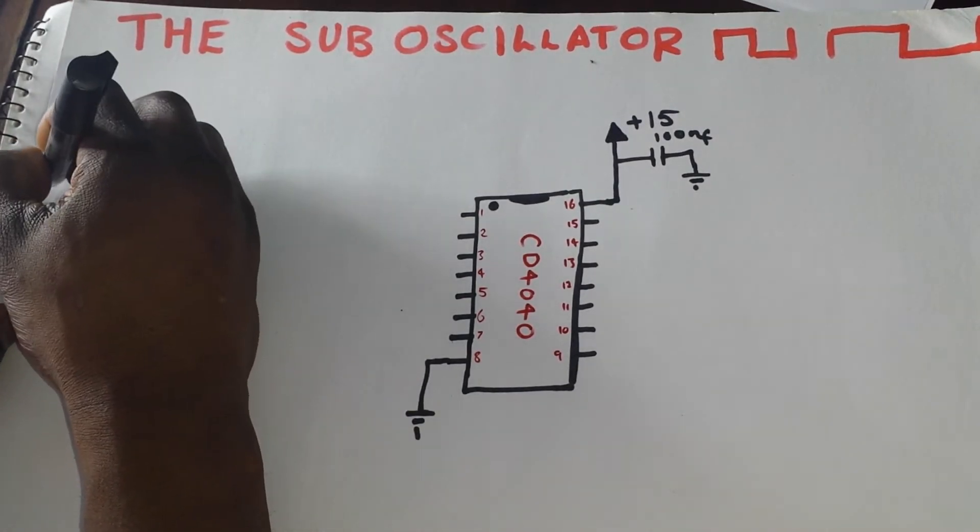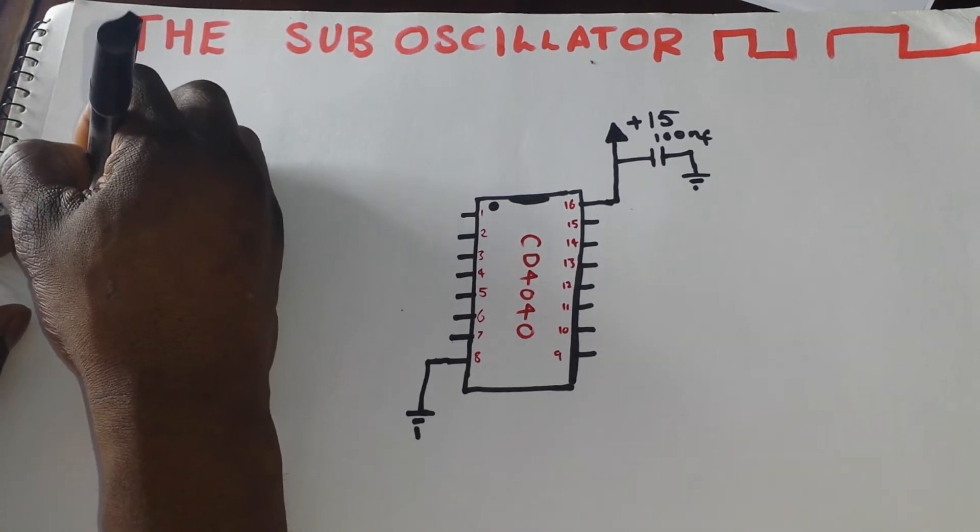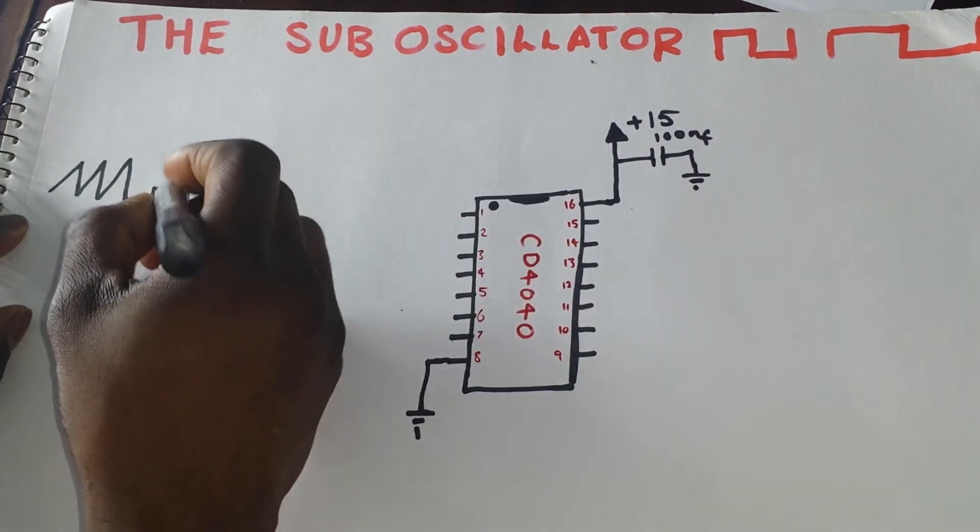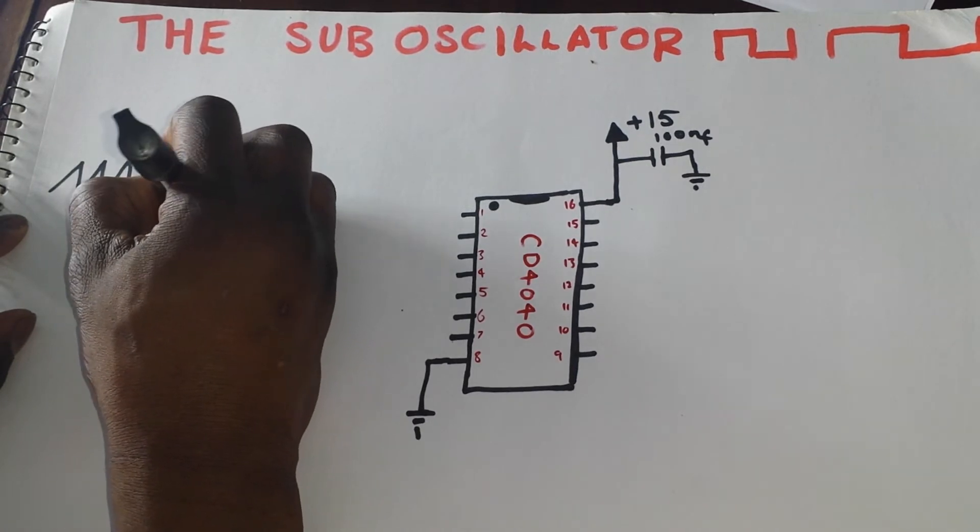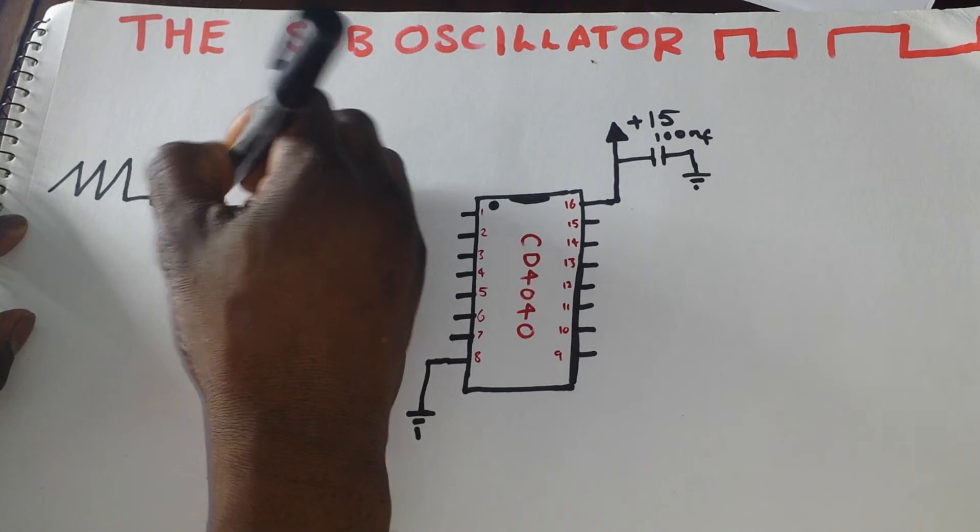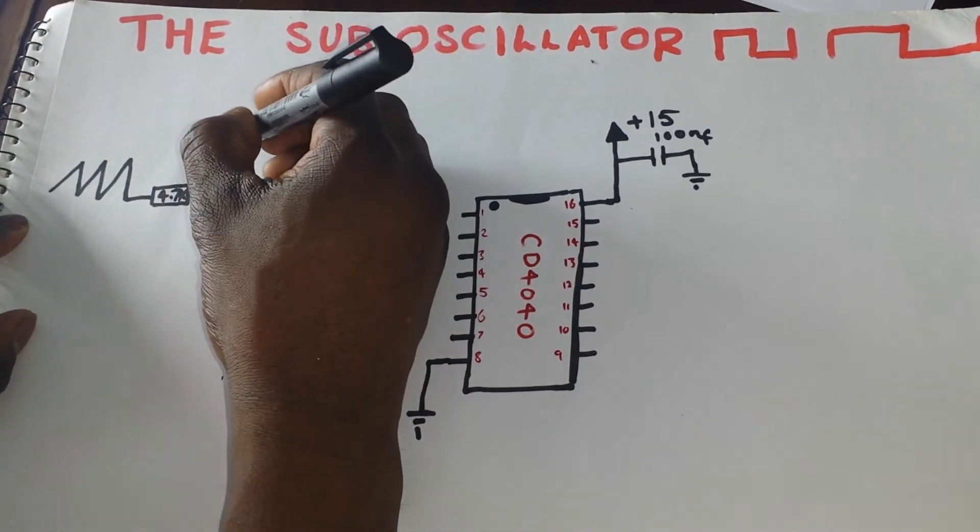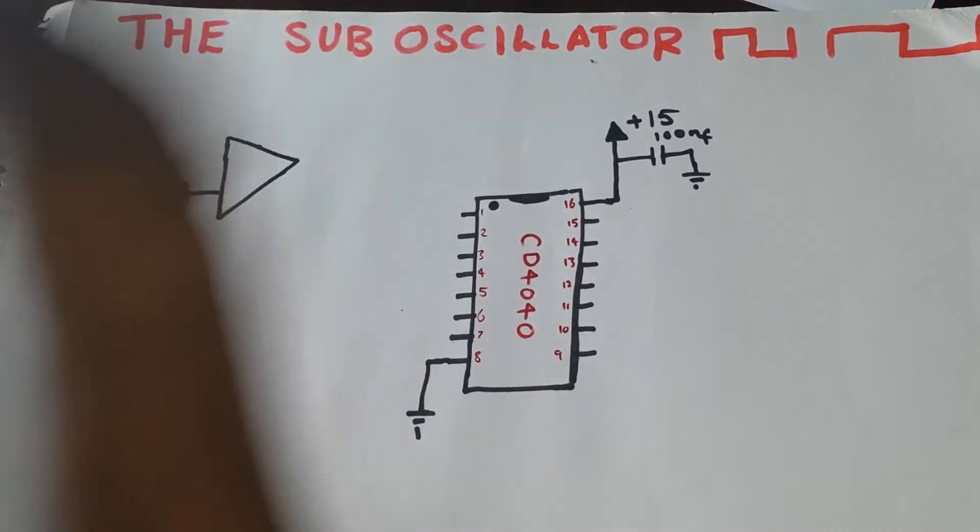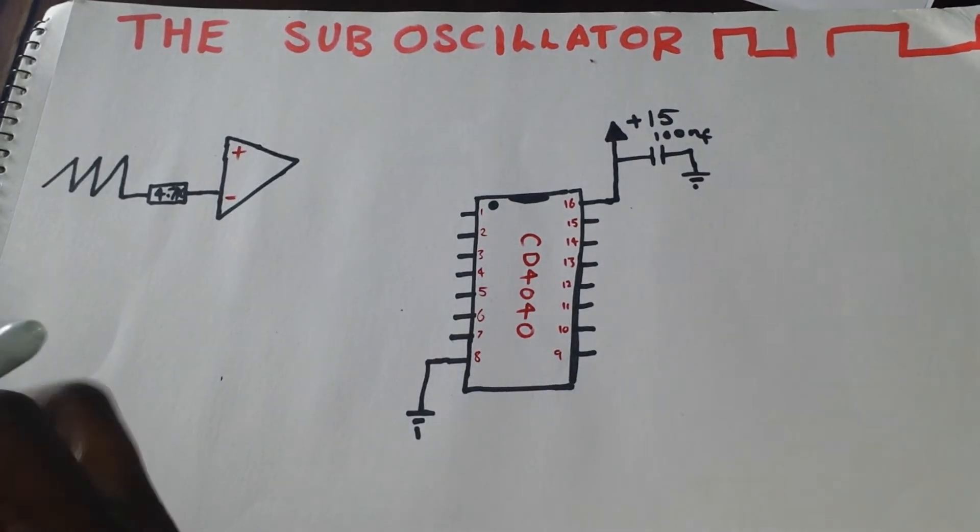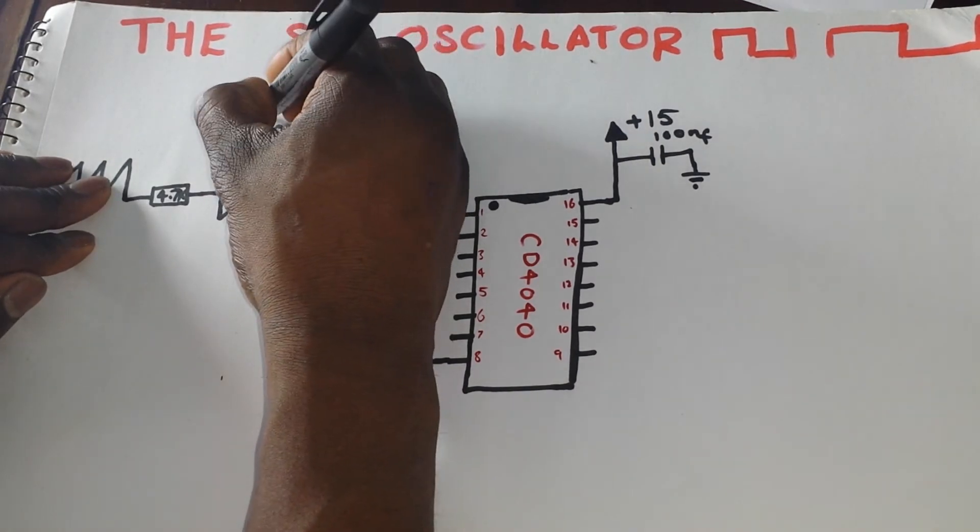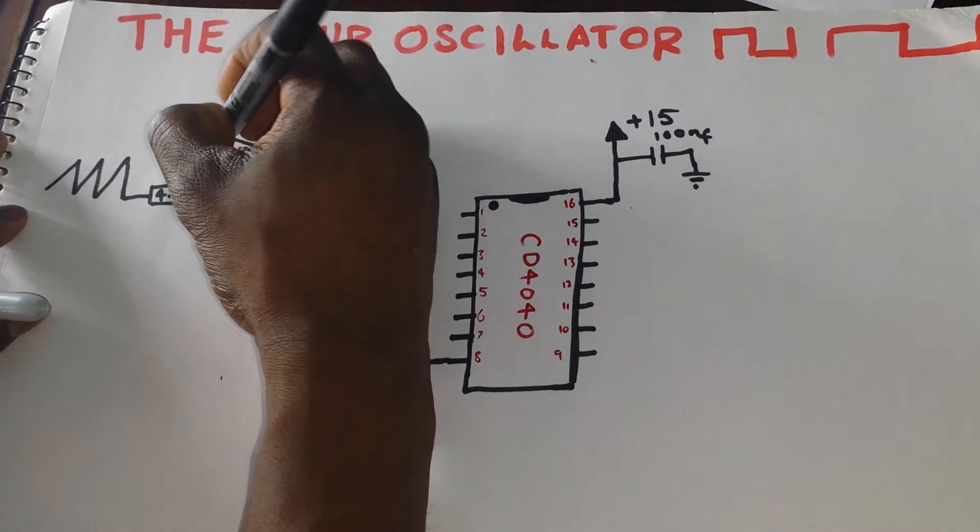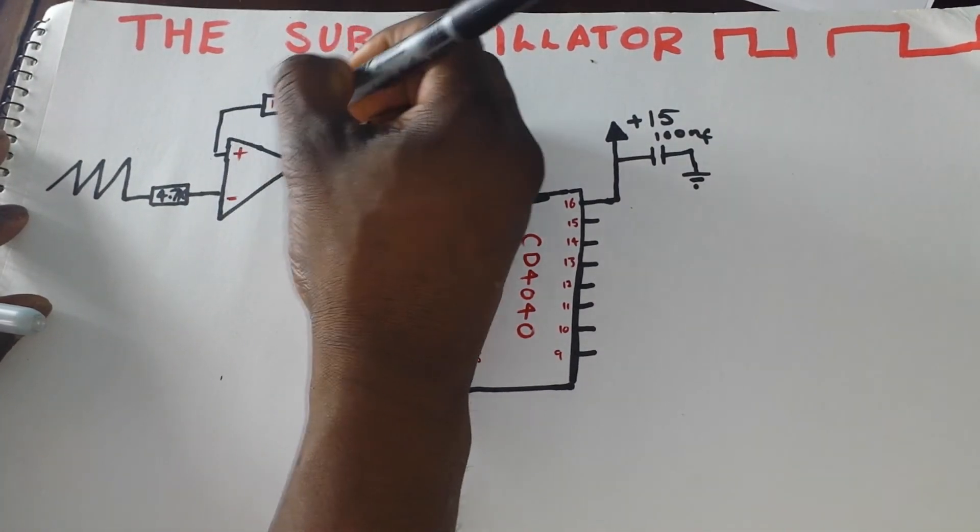So what I did was I took the sawtooth out from my oscillator and then I fed that into a resistor which I'll just call I think it was about 4.7k. Again you don't have to take these values for gospel, just experiment and try your own values and see what works best. And then we will send that into the inverting side of an op amp.